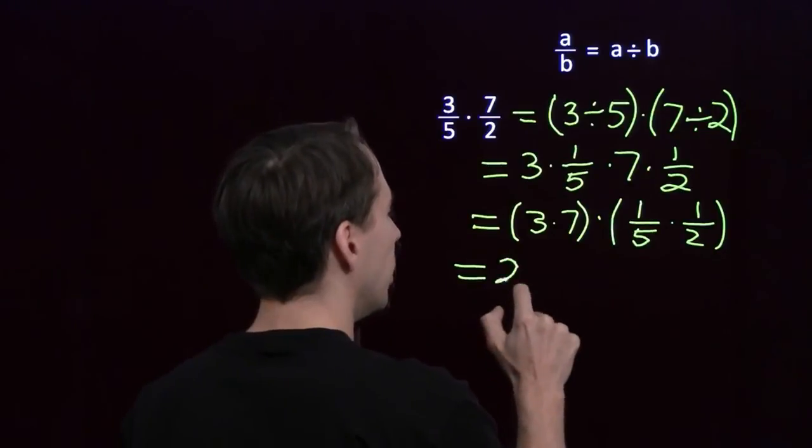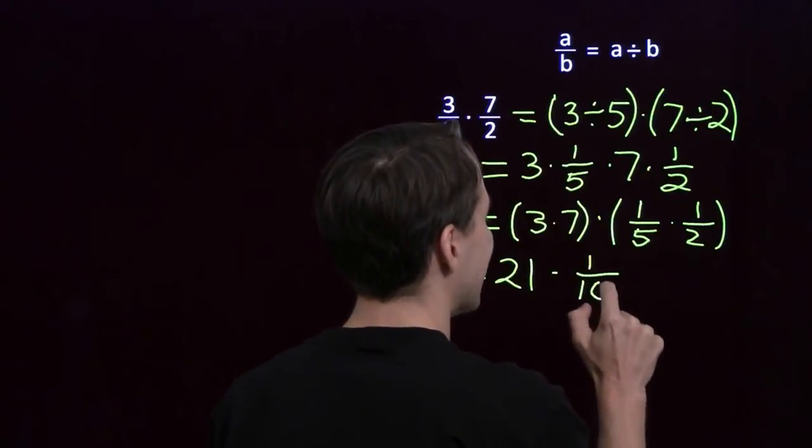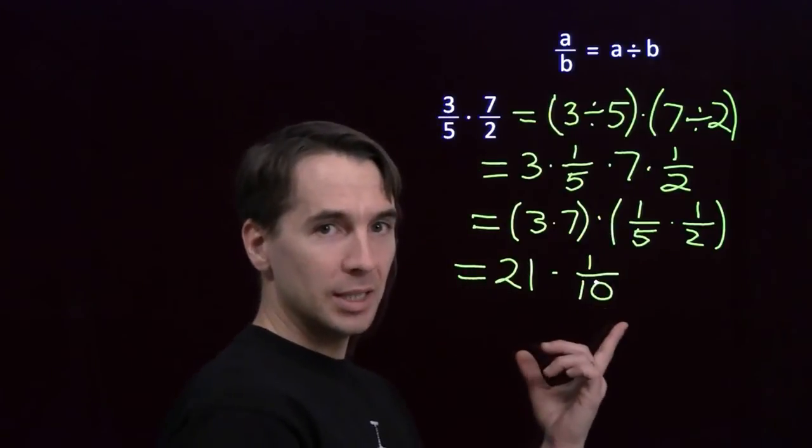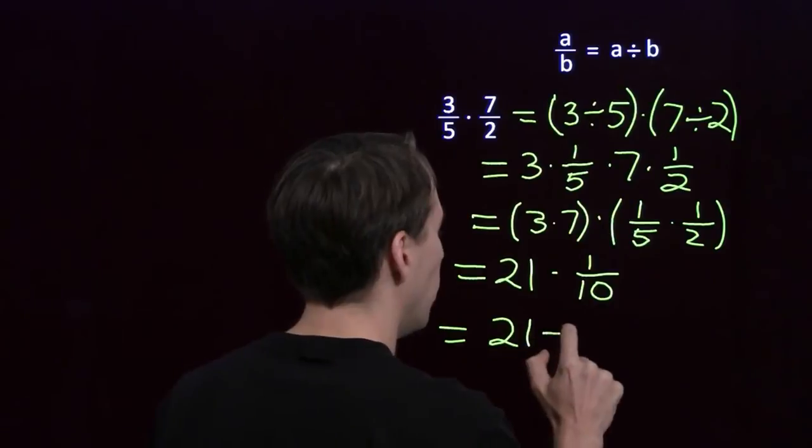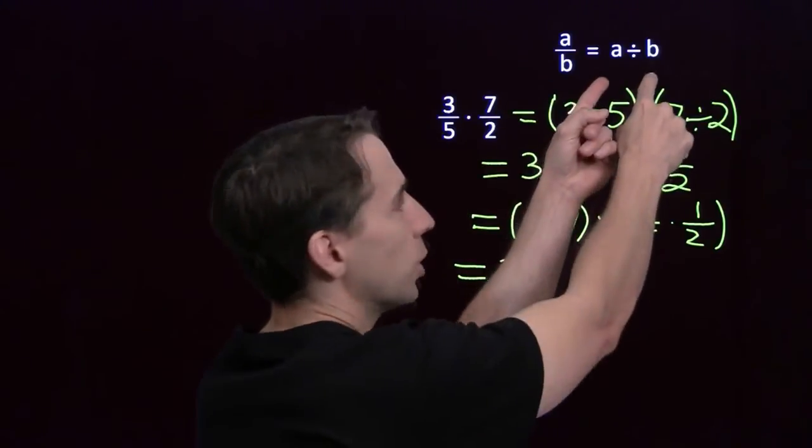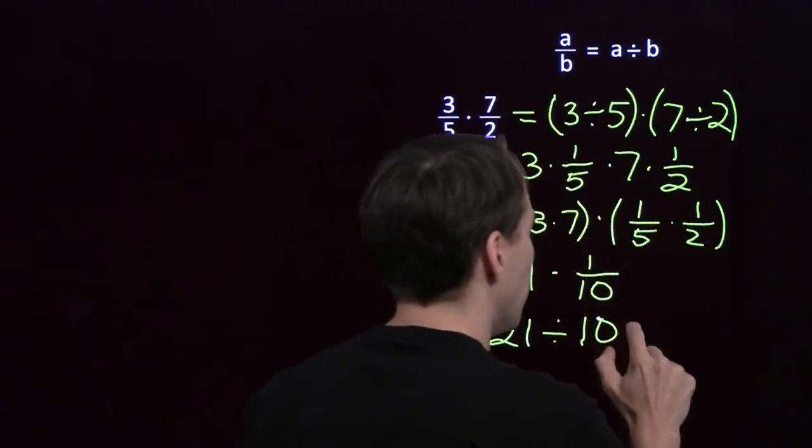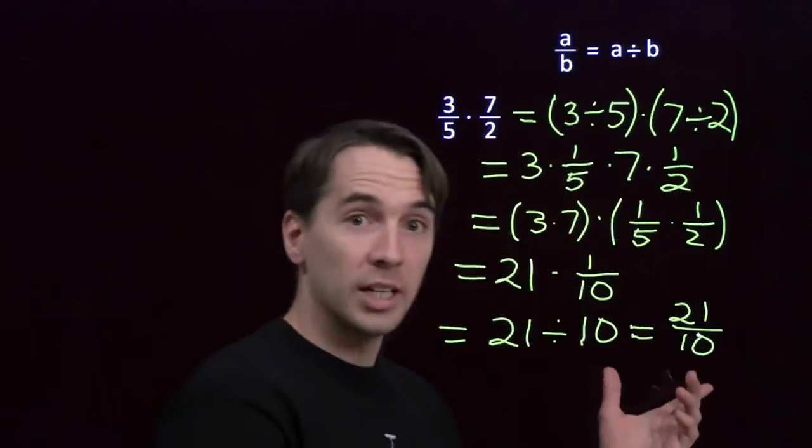3 times 7 is still 21. And 1 over 5 times 1 over 2 is 1 over 10. 21 times the reciprocal, that's division. 21 divided by 10. It's a division, that means it's a fraction. We can write it as 21 over 10, and that's our answer.